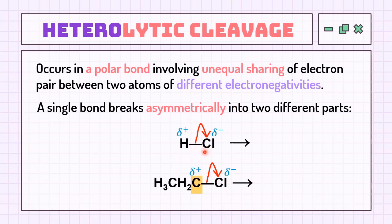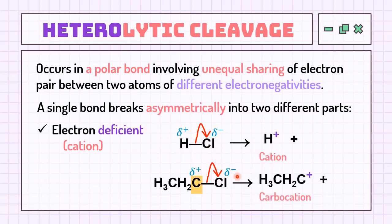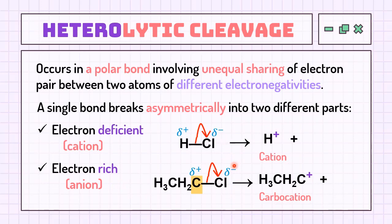The direction of bond breaking is led by the electronegativity of the atom, so the arrow points toward the species with the stronger pull for electrons, denoted by the partial negative charge. One species formed is electron-deficient — the one with partial positive charge. In HCl, we form H⁺ as the cation, while for chloroethane, we have a carbocation — carbon with a positive charge. The other species is electron-rich, the one with partial negative charge. In both examples, we have chlorine as the anion.